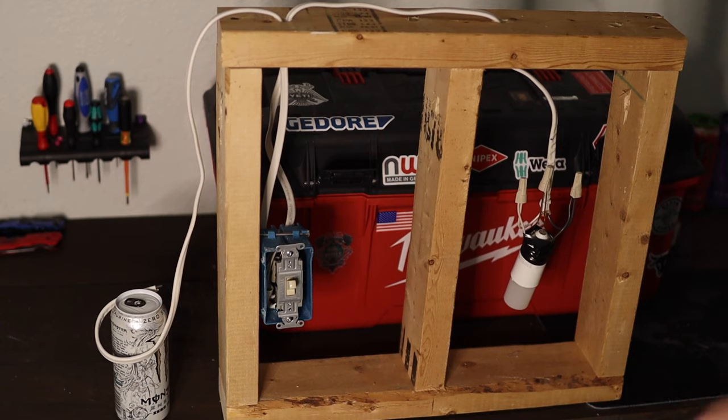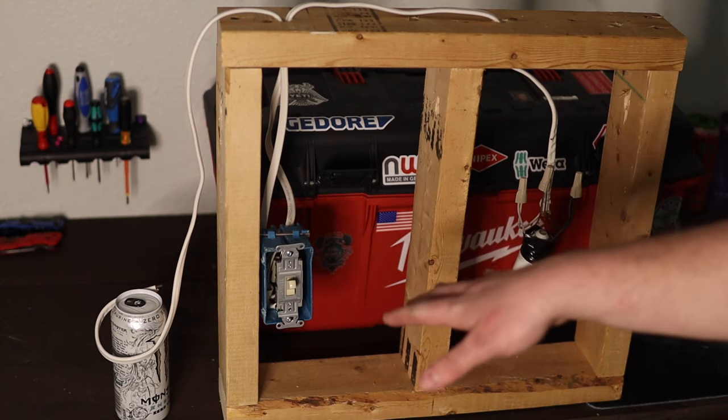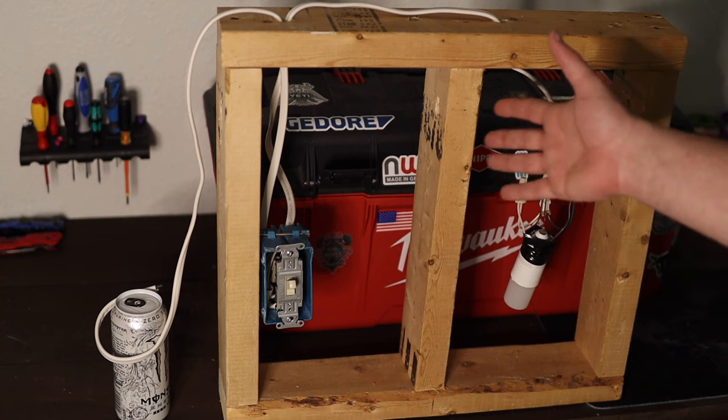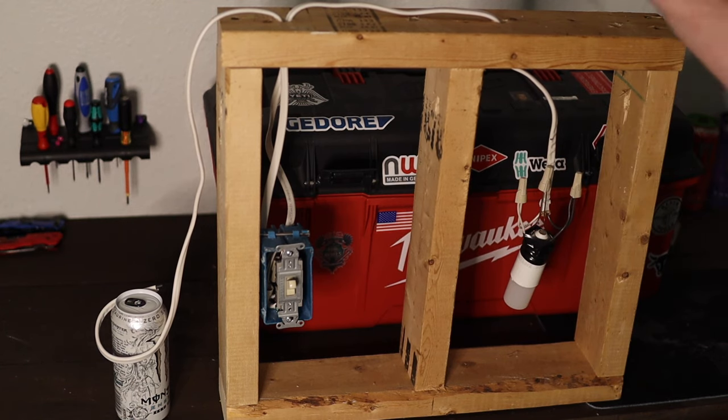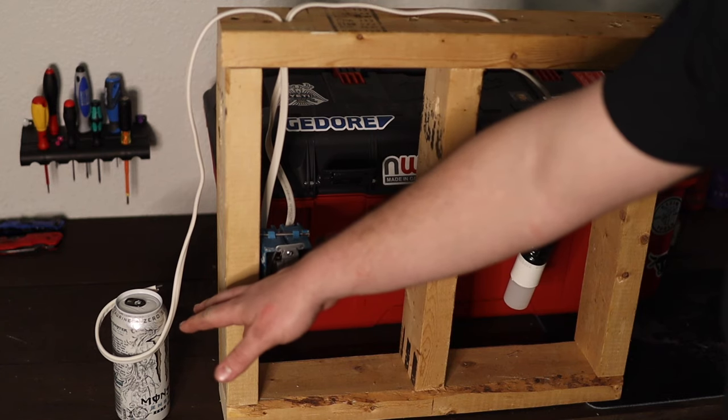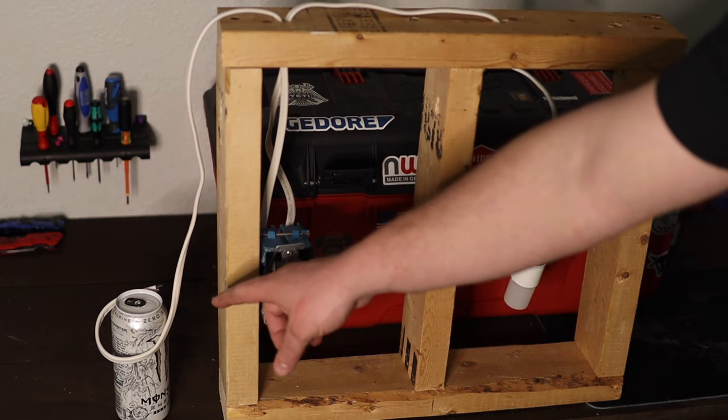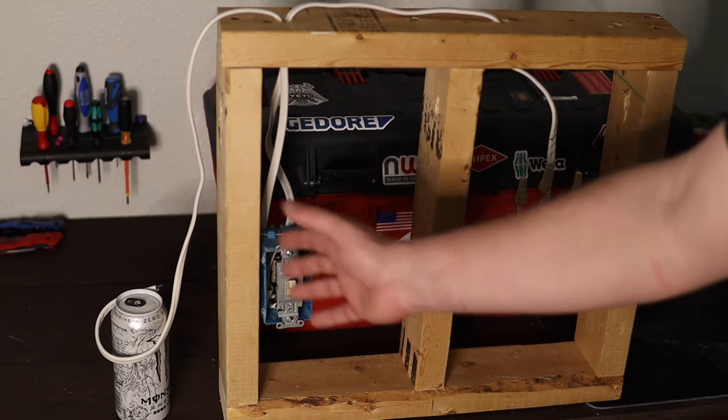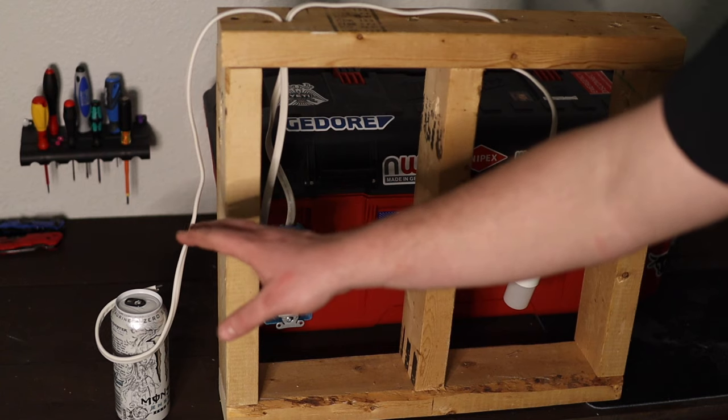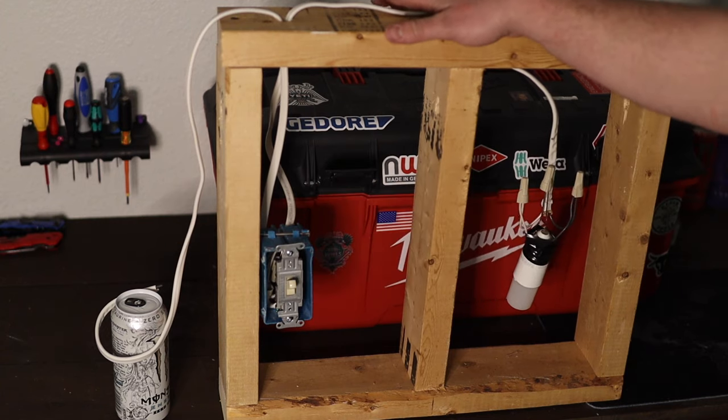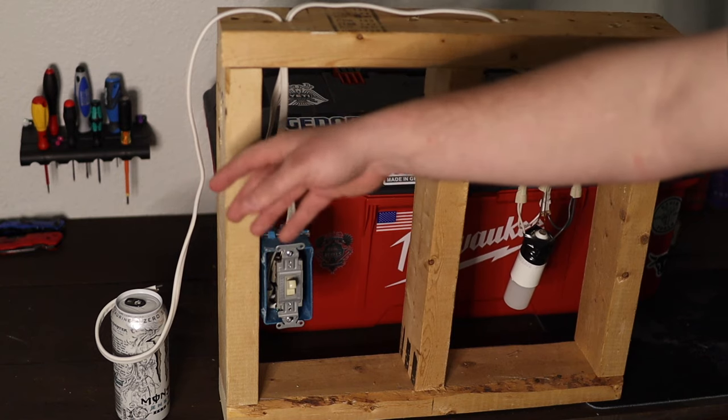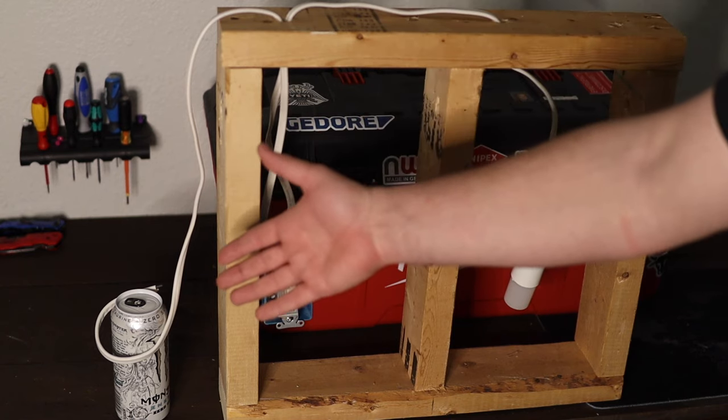Alright, so this is my demonstration here. Obviously your studs are going to be further apart than this. They should be 16 on center in most places. Now this monster can over here is going to represent your power and we'll start from left to right. This will represent your power so it'll either, if it's a new feed, it'll come directly from your panel. If these were existing lights then there should have been a power cable that would already come in and this is the constant hot, okay?